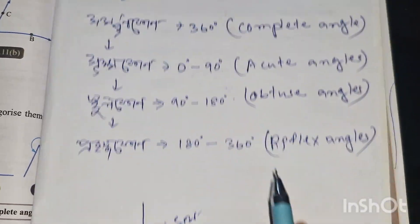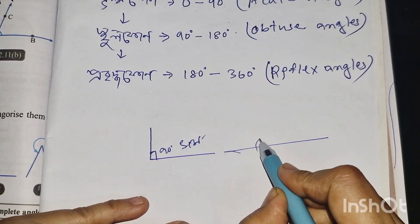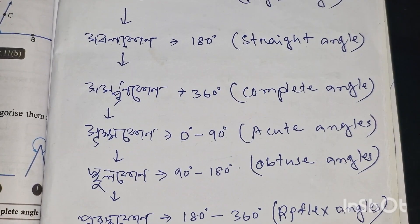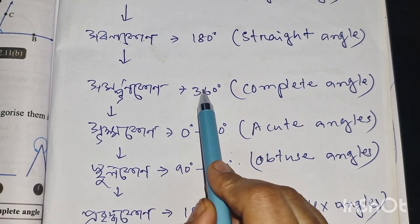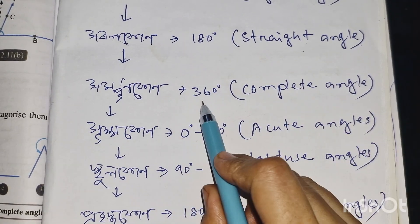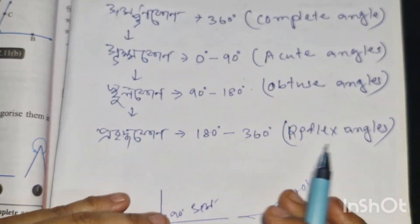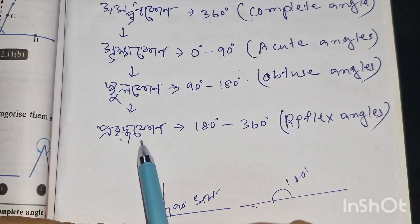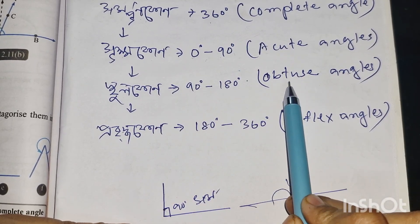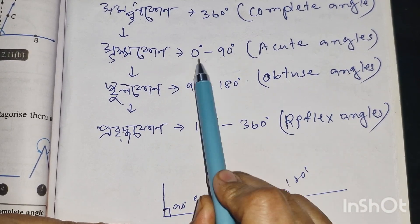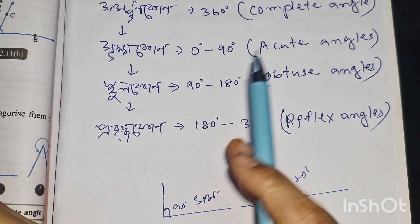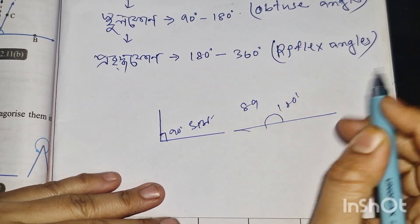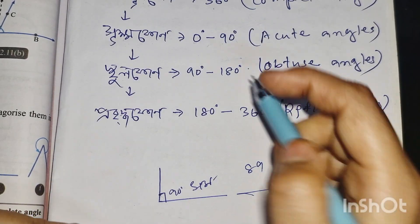That is a horrible one hundred eighty degree — a straight line. It has to have a one eighty degree straight angle. A complete angle is 360 degrees. We also have acute, obtuse, and reflex angles. Acute is zero to eighty-nine degrees.